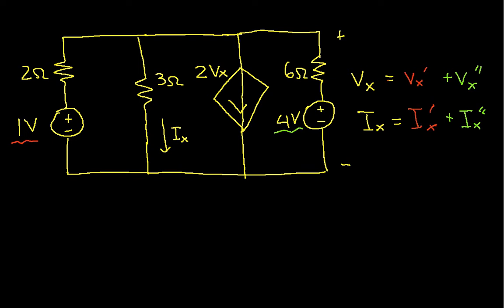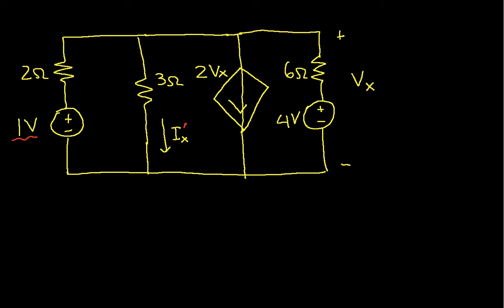With that introduction, let's solve for Vx prime and Ix prime. We'll bring up a clean copy of the circuit and find the response due to this 1-volt source, so this will be Ix prime and Vx prime. When solving due to one source, the dependent source depends on the voltage in this sub-circuit alone. We also eliminate the 4-volt source and replace it with a short circuit, giving us the circuit we need to solve.